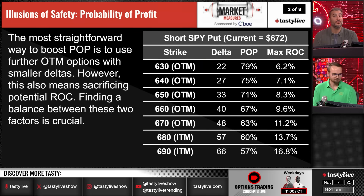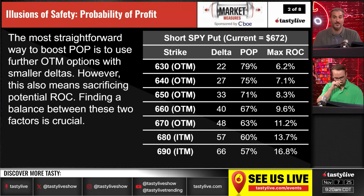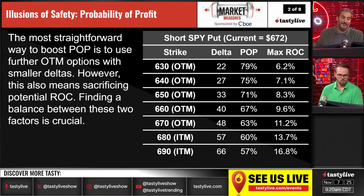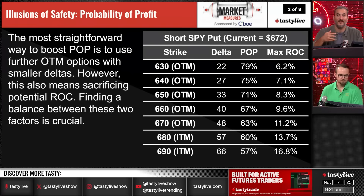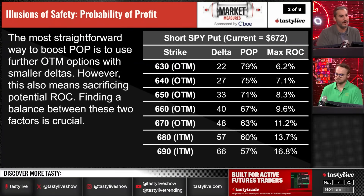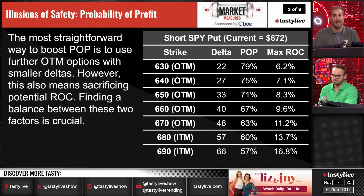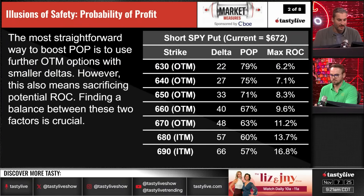The most straightforward way to boost POP is to use further out-of-the-money options with smaller deltas, but this also means sacrificing potential return on capital, so finding a balance is crucial. Looking at out-of-the-money puts on SPY at 672, max return on capital gets lower as you go further out of the money. We like to target somewhere between 10 and 20 percent return on capital for a naked position. When managing at 50 percent of max profit, I'm looking for 5 to 10 percent return on capital as my metric.